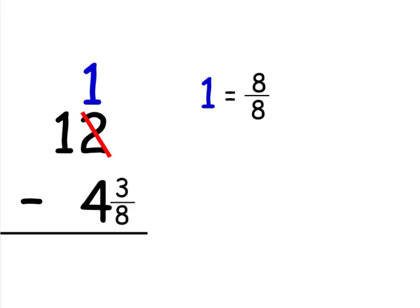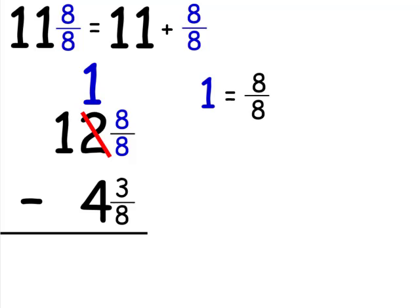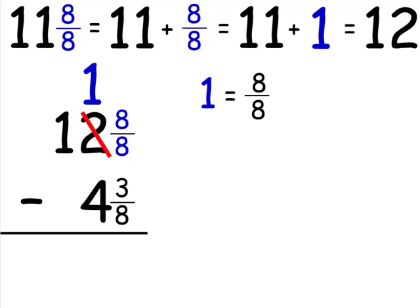When we borrow 1, we'll just add 1 as a ratio, 8 over 8. Now we have 11 and 8 8's. 11 and 8 8's is equal to 11 plus 8 over 8, which is equal to 11 plus 1, which is equal to 12.